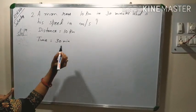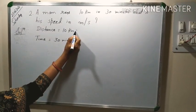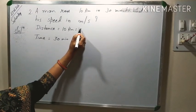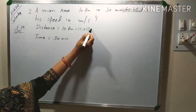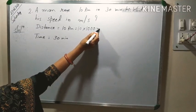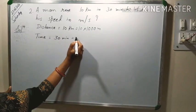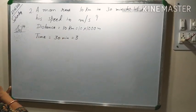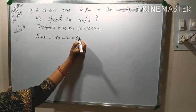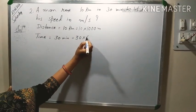So we need to change this km into meter. So it will become 10 into 1000. Now it is in meter. Time, we have to convert minute into second. So it will be 30 into 60.